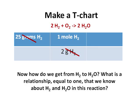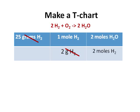Now, how do we get from H2 to H2O? Because what we're wanting is H2O. Well, what is a relationship that we know of that's equal to one, that we know between H2 and H2O in this equation? Looking at the reaction, we have two molecules of H2 on the left side and two molecules of H2O on the right side. So we use that in our next step of the T-chart. You can also put one to one, because the twos reduce.